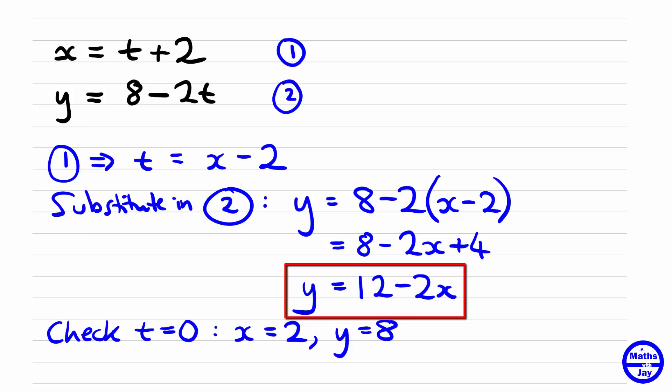Let's have a look: 12 minus 2 times 2. We're hoping that will give us 8, which of course it does, so that is equal to 8. That looks as if it's working.